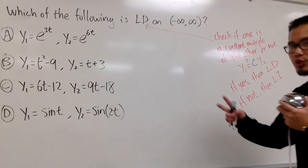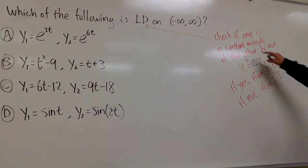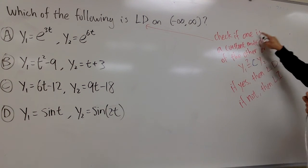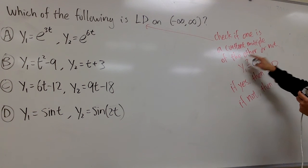Let me show you the check for two functions only. All right? For two functions, all we are going to do is check if one function is a constant multiple of the other or not.